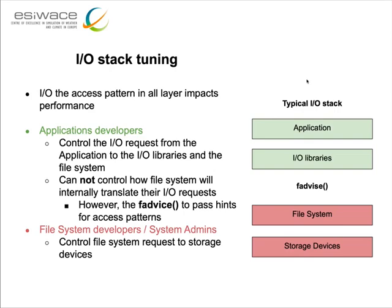The reason we want to trace the IO generated by the application is of course to improve its performance. The application developers can control how the application will generate IO, and the IO library developers can also control how the IO libraries will generate IO. They cannot control how the file system will generate the IO and issue it to the storage devices. However, there is a way we can advise the file system and pass some hints on the way we are going to use it — this is called the fadvise system call. It's not guaranteed, but it will change the way the file system receives and processes the IO requests.